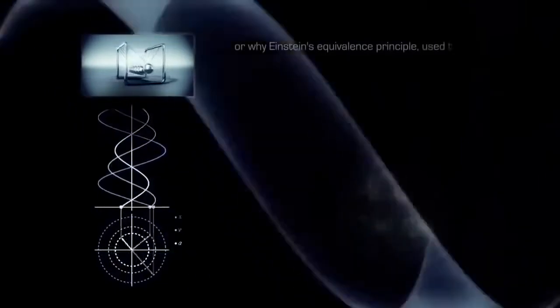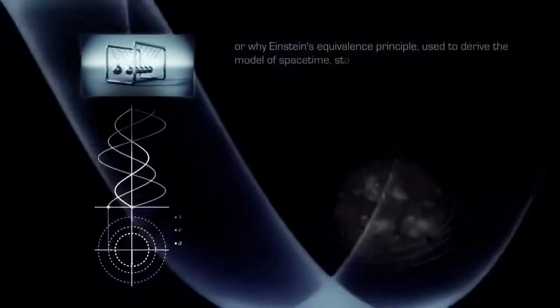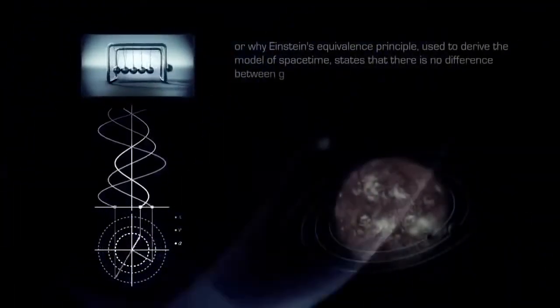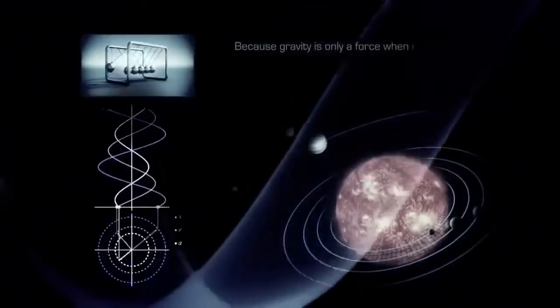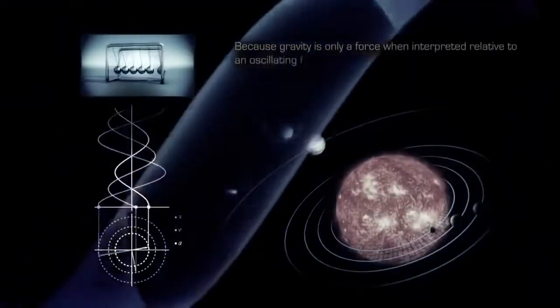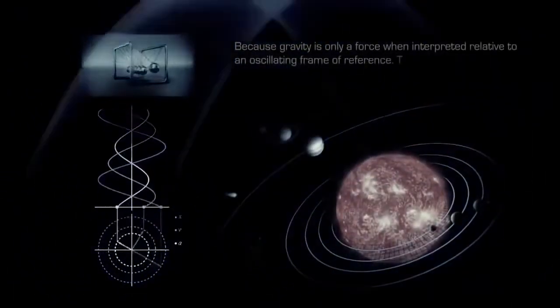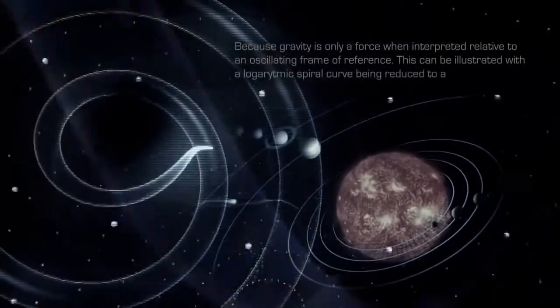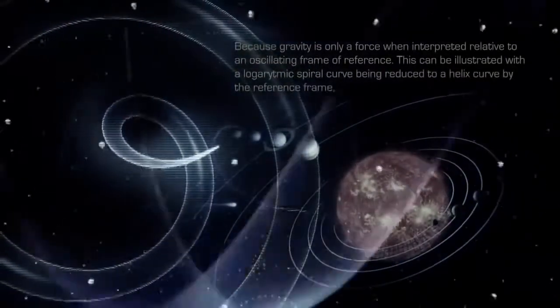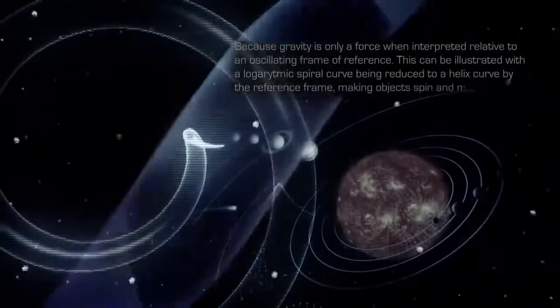Or why Einstein's equivalence principle, used to derive the model of spacetime, states that there is no difference between gravity and acceleration. Because gravity is only a force when interpreted relative to an oscillating frame of reference. This can be illustrated with a logarithmic spiral curve being reduced to a helix curve by the reference frame, making objects spin and move in orbits.